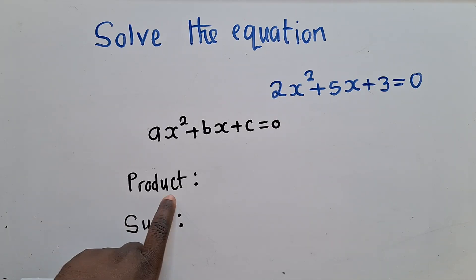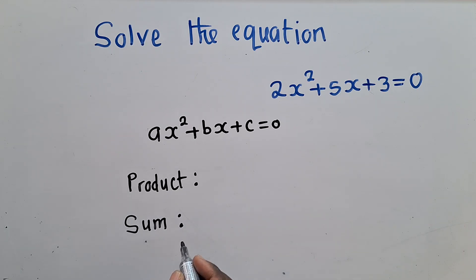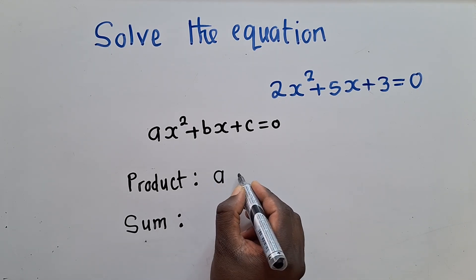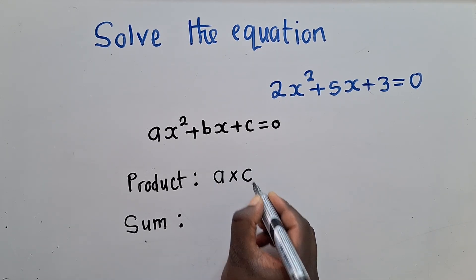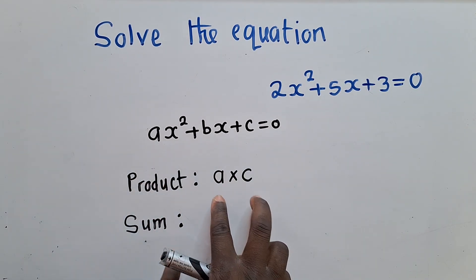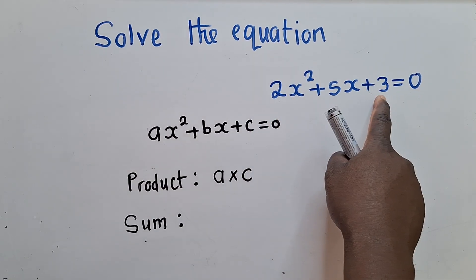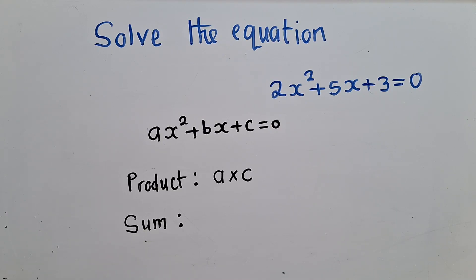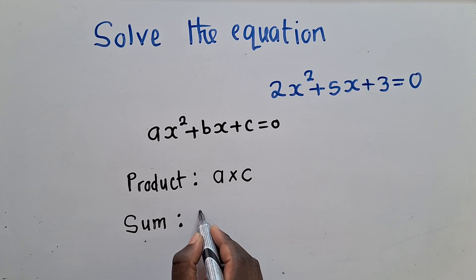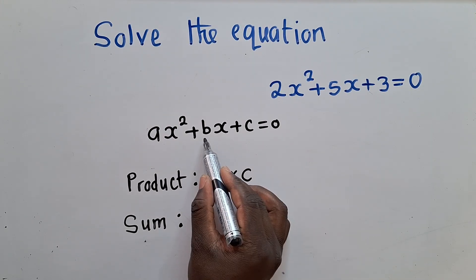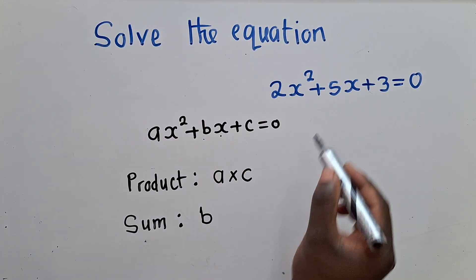So now this product can be found by multiplying, that's why it's called product. Multiplying your A times your C. So always A times C. It's giving us the product, which is, for example, here you say 2 times 3. So now from here, to identify your sum, you just get the B, the number that is with the x, your B. In this case, it's a 5. That's our sum.